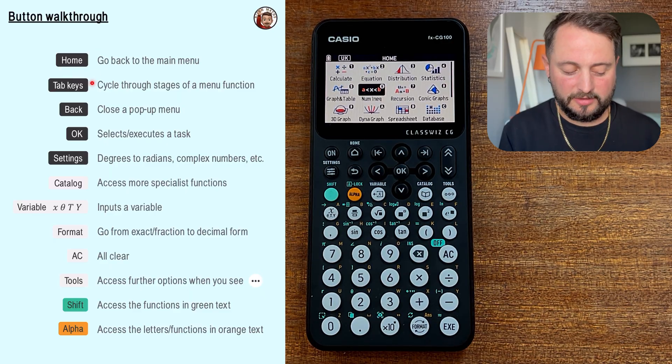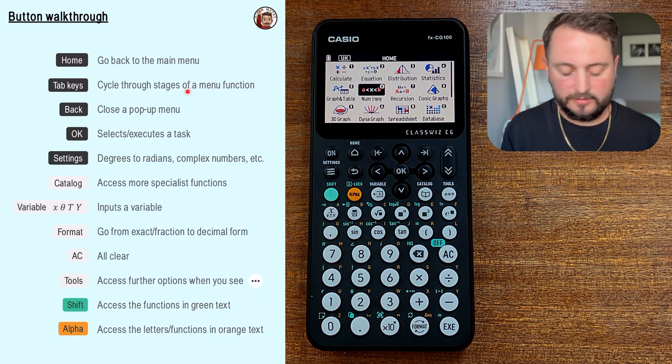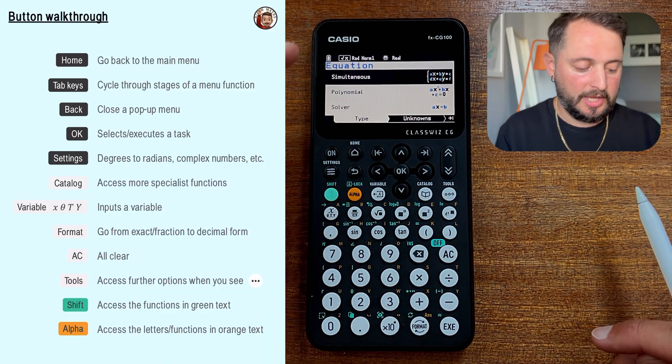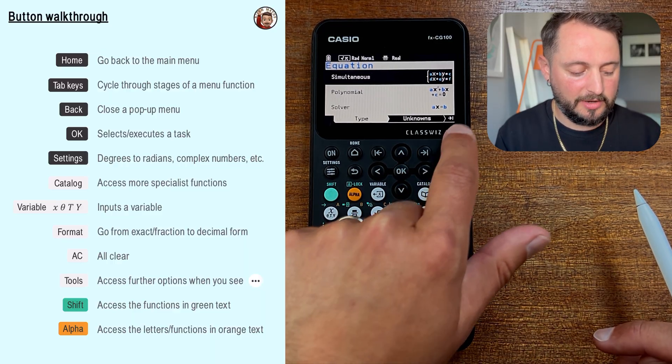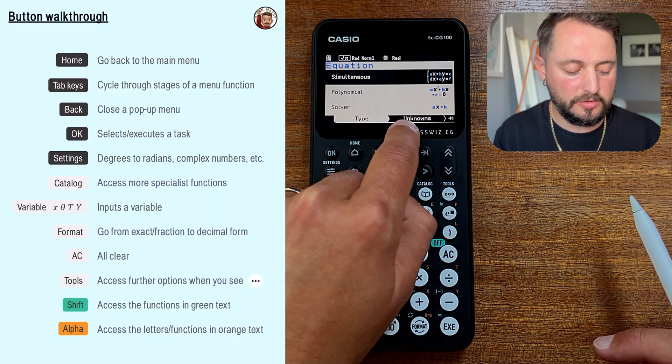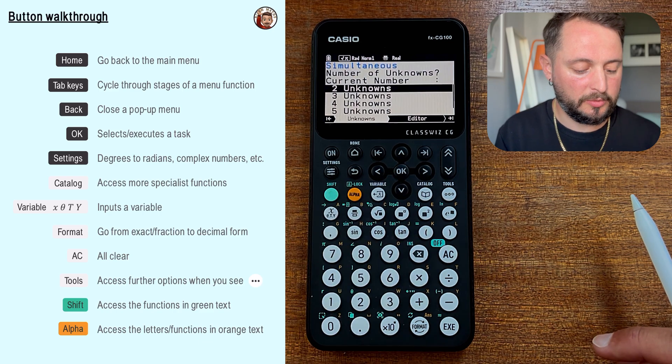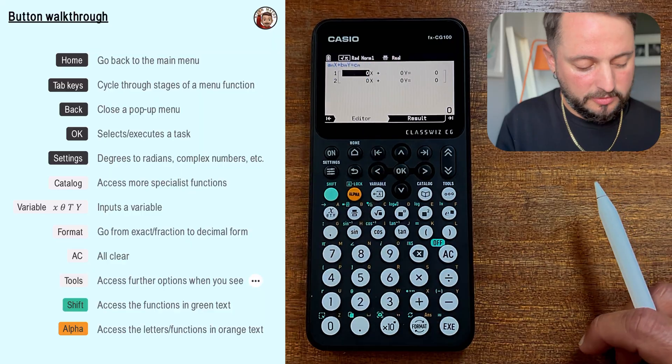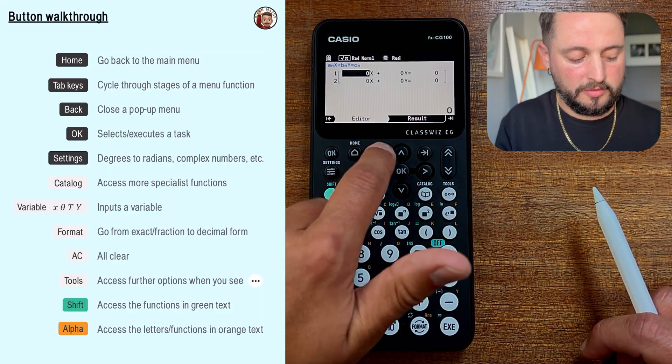The tab keys, we've sort of started seeing that in the initial setup of this calculator. It will cycle through stages of a menu. So for example, if I was in the equation section and I wanted to solve a simultaneous equation, if I press this tab key, which is the arrow with the flat line, you can see it appearing on the screen here as well. It will take you through to this next section from the type of equation to now actually filling in the unknowns on the simultaneous. So here we're going to do number of unknowns. Let's just say it was two unknowns. We can take it through to the editor, fill in some different numbers, and then it can take you through to some results that you might have there.